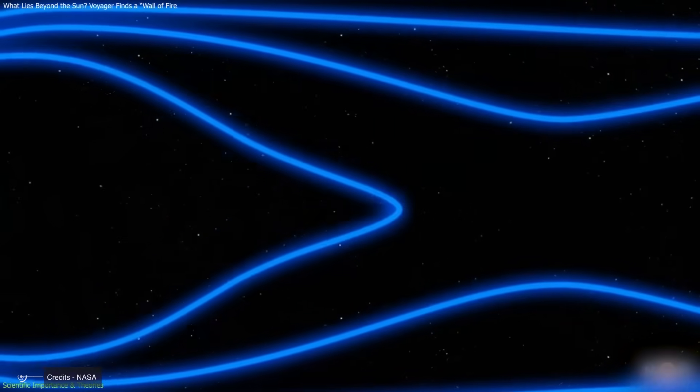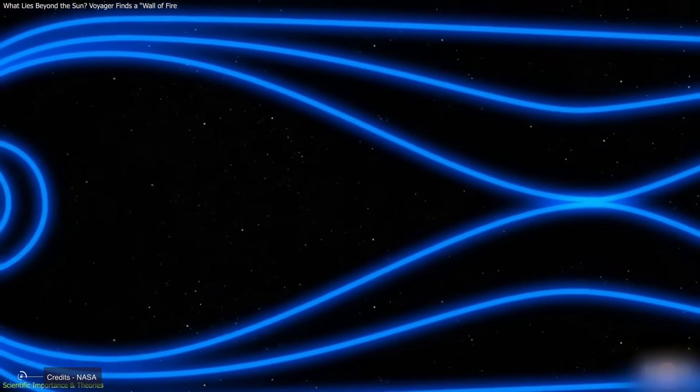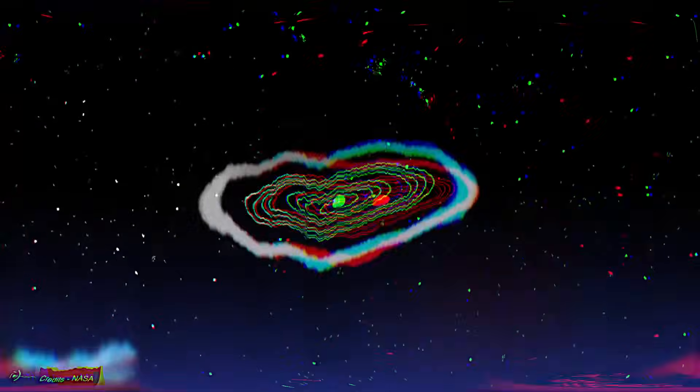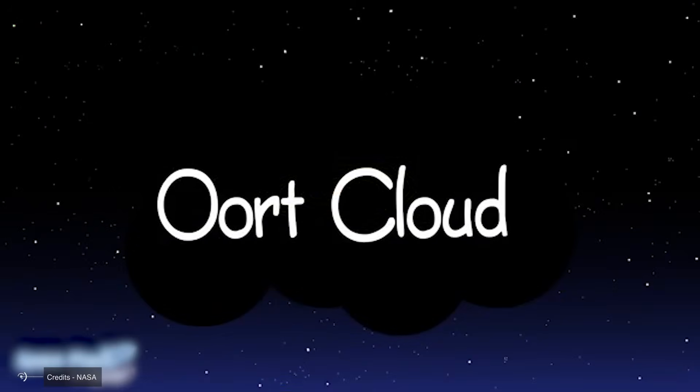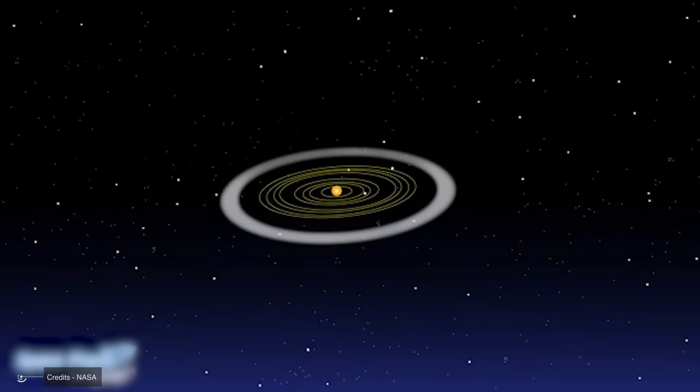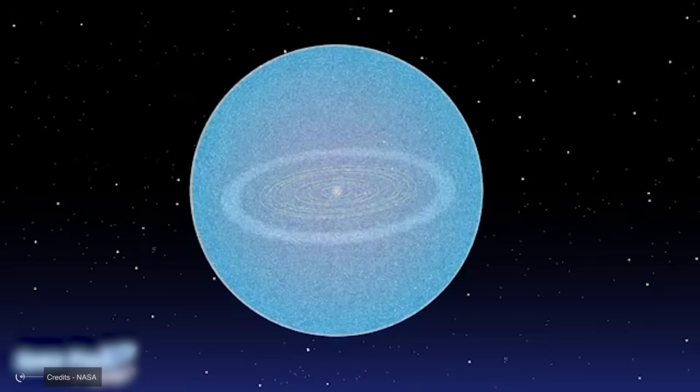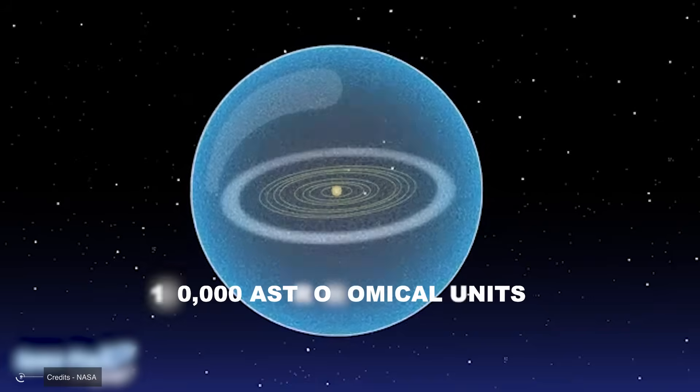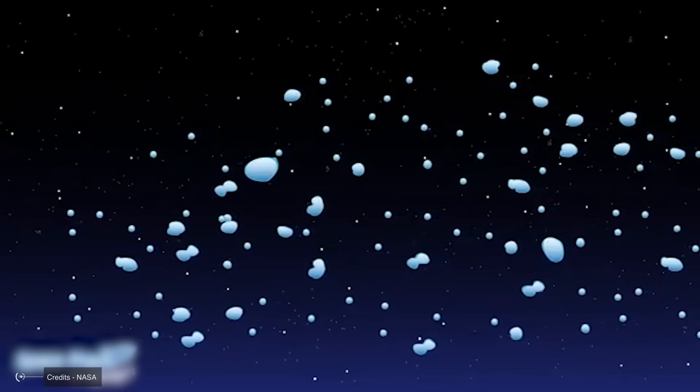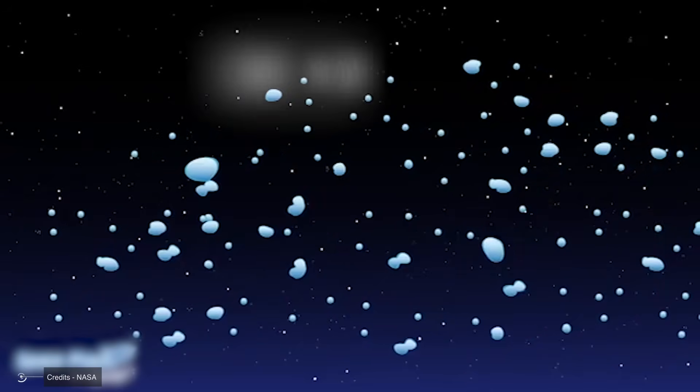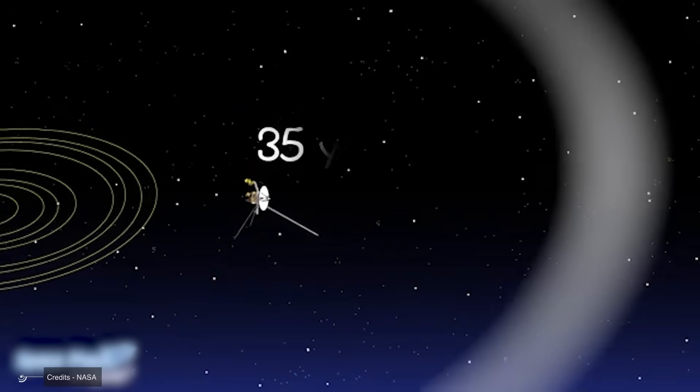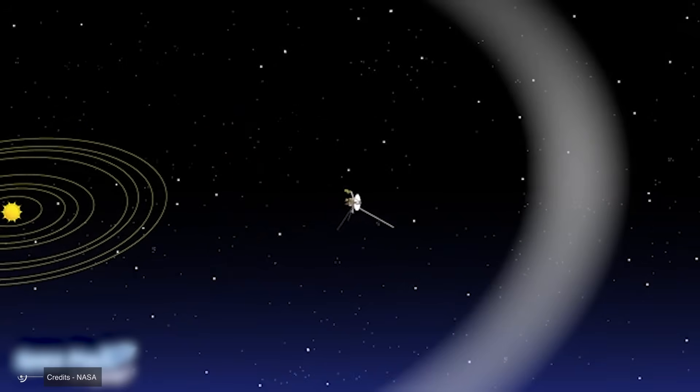But if we consider the solar system as the entire territory under the Sun's gravitational influence, they are still a long way from leaving, since this region includes the Oort Cloud, a gigantic sphere of comets and planet-forming debris that surrounds the solar system and extends to almost 100,000 astronomical units from the Sun, or more than 9.3 trillion miles. To put this in perspective, Voyager 1 is currently about 15 billion miles from Earth, which is barely 0.1% of the way to the edge of the Oort Cloud.